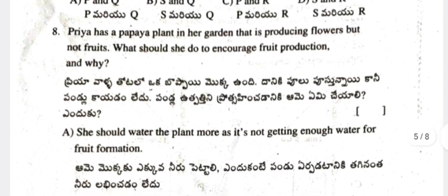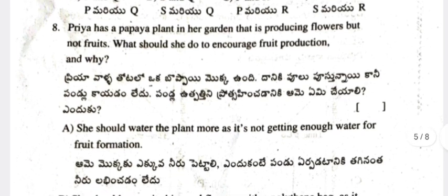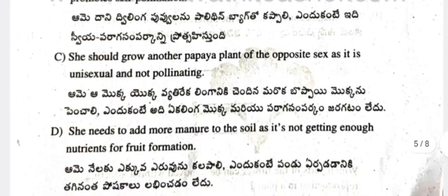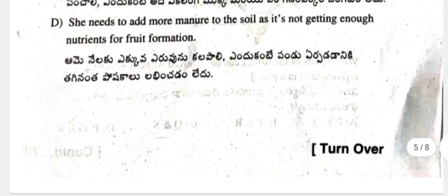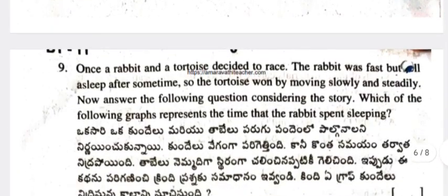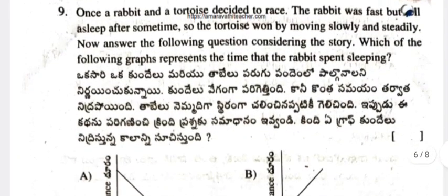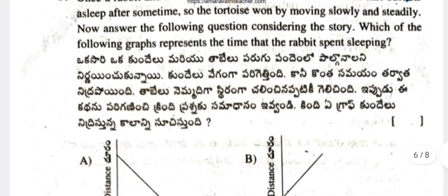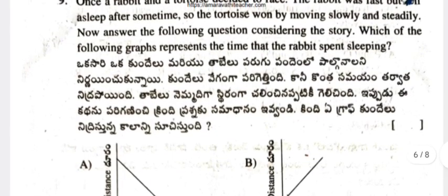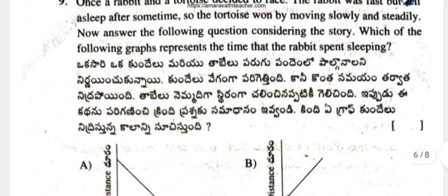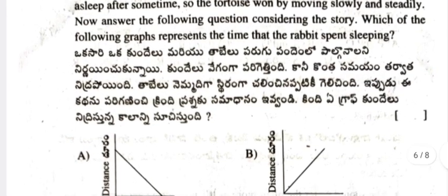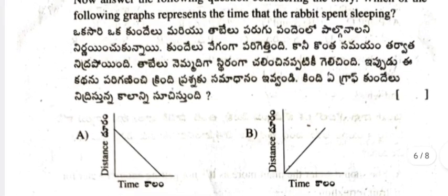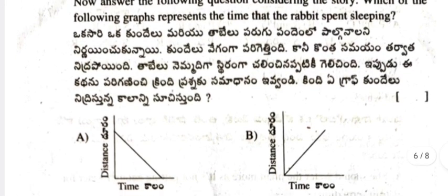Question 8: Priya has a papaya plant in her garden that is producing flowers but not fruits. What should she do to encourage fruit production and why? Four options are given — the correct one can be picked up; answers are given at the end of this question paper. Question 9: Once a rabbit and a tortoise decided to race. The rabbit was fast but fell asleep after some time, so the tortoise won by moving slowly and steadily. Answer the following questions considering this story.